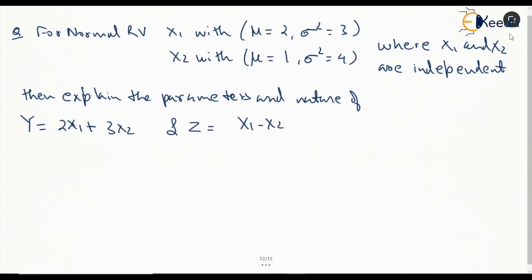Now we can see that X1 and X2 are normal random variables which are independent. Y equal to 2X1 plus 3X2 is a linear combination with c1 = 2 and c2 = 3, and Z equal to X1 minus X2 is also a linear combination with c1 = 1 and c2 = minus 1. We know that a linear combination of independent normal variables will also give a normal random variable.